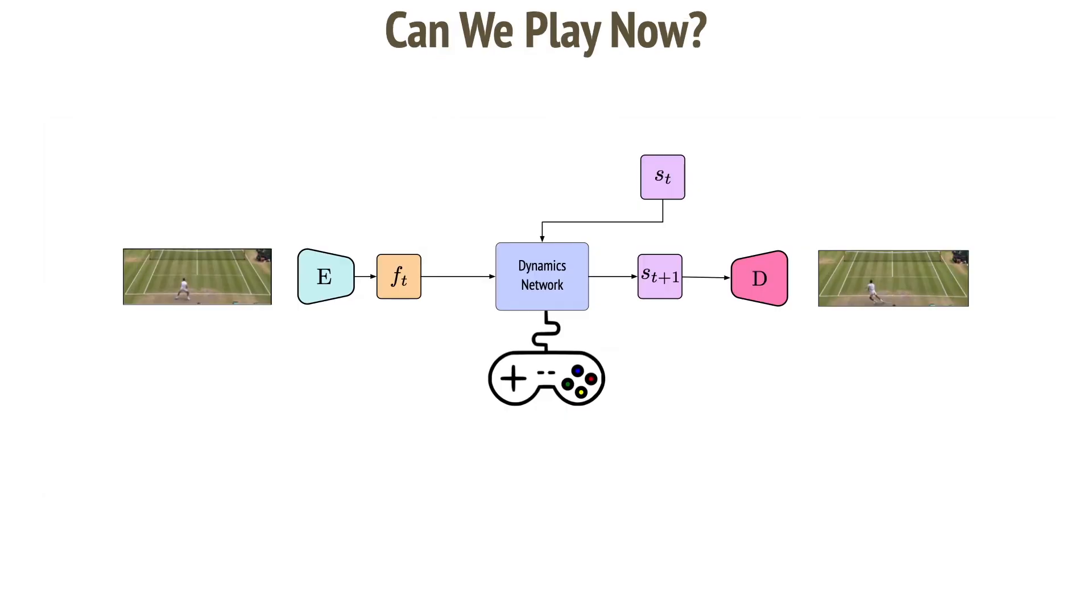At inference time, only the encoder, the decoder, and the dynamics network are used. We connect the dynamics network to a game controller of the user, and the user can now play a video.